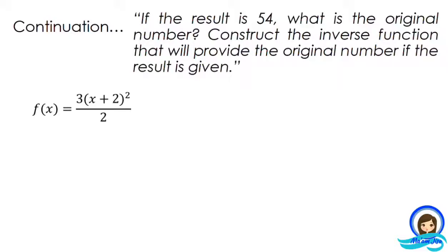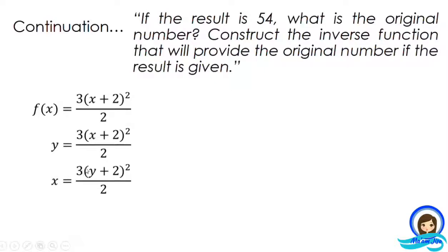Now let's find the inverse. You already know the steps. First, write the function in terms of y: replace f(x) with y and copy the remaining part of the equation. Next, interchange x and y — x becomes y and y becomes x — so we have: x = 3(y + 2)² / 2.